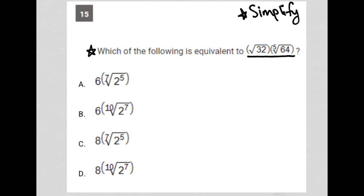We do have two things here that can be simplified. I'm going to simplify the root 32 first. The square root of 32 can be simplified to the square root of 16 times the square root of 2, which can be simplified to 4 square root 2.